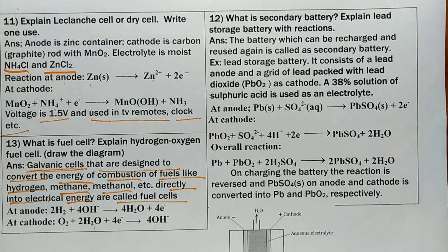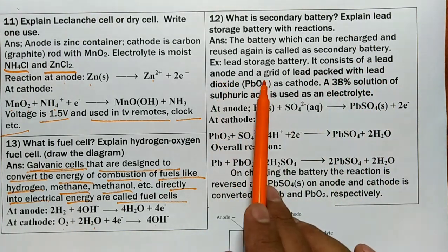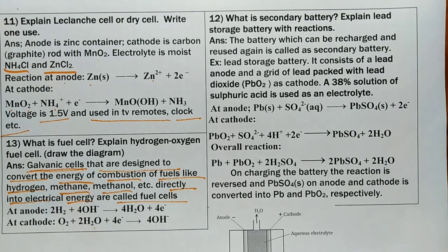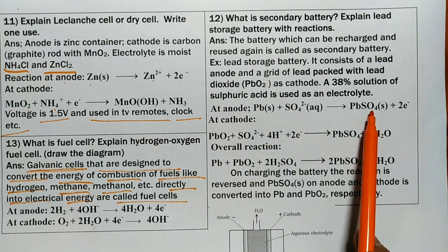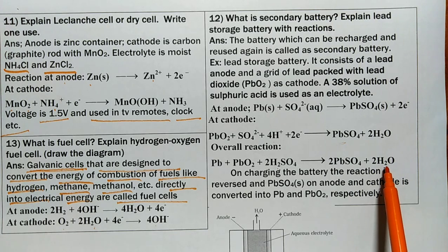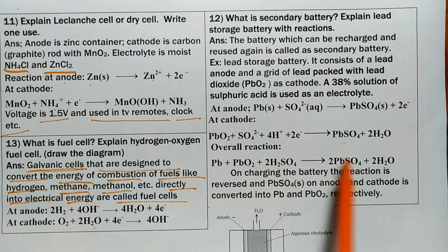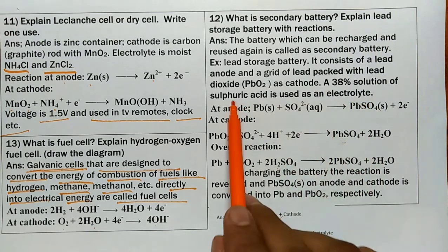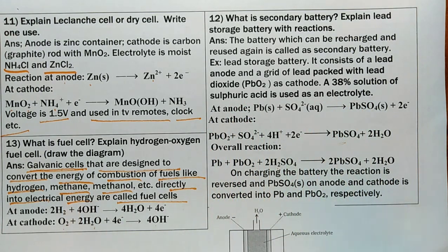What is a secondary battery? Explain the lead storage battery with reactions. A secondary battery is a battery which can be recharged and reused. The lead storage battery consists of a lead anode and a grid of lead packed with lead dioxide (PbO₂) as cathode. The electrolyte is 38% sulfuric acid solution. Anode reaction: Pb + SO₄²⁻ → PbSO₄ + 2e⁻. Cathode reaction: PbO₂ + SO₄²⁻ + 4H⁺ + 2e⁻ → PbSO₄ + 2H₂O. Overall: Pb + PbO₂ + 2H₂SO₄ → 2PbSO₄ + 2H₂O. On recharging, the reaction is reversed: PbSO₄ at anode and cathode is converted back into Pb and PbO₂ respectively.